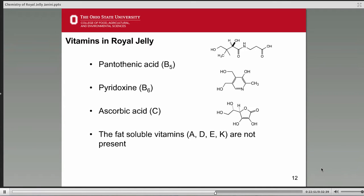Royal jelly contains trace amounts of water-soluble vitamins: pantothenic acid, vitamin B5, B6 or pyridoxine, and vitamin C or ascorbic acid. You'll notice that we don't see vitamins A, D, E, or K — these are known as fat-soluble vitamins. Given that royal jelly is mostly water, this is probably no surprise. Even if these vitamins were somehow available to get into royal jelly, they're not soluble in it, so that's probably why we don't find them in there.